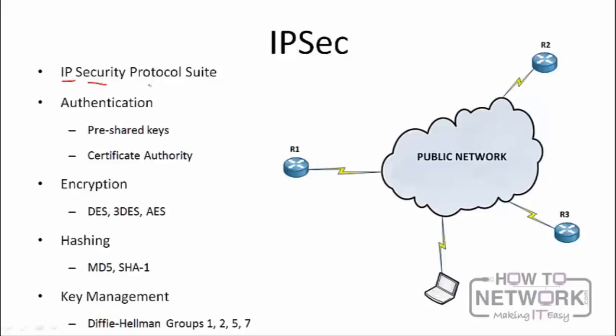For authentication in IPSec, we have pre-shared keys and certificate authorities. With pre-shared keys, you configure a matching key on both endpoints — for example, a key called 'secret' on Router 1 that must also be configured on Router 3. When they negotiate the VPN, they exchange and validate these pre-shared keys to authenticate. If the pre-shared keys don't match, the VPN will not come up.